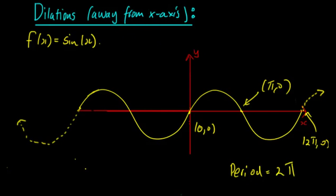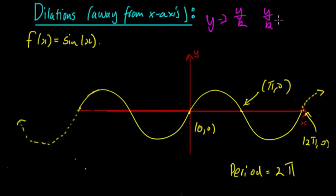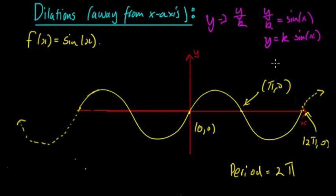If we're dilating from the x-axis, that means we're replacing y with y/k. So once we replace y with y/k, we get y/k = sin(x). Therefore y is equal to k times sin(x).